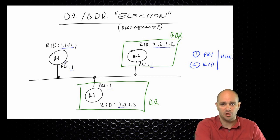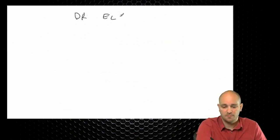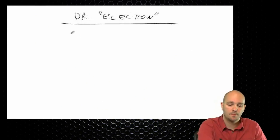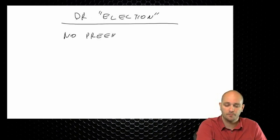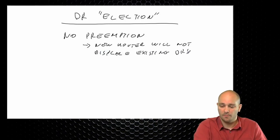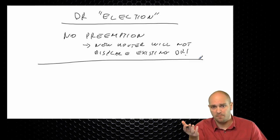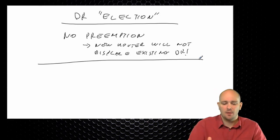There is one important caveat: if R1 booted first, it would be the only router on the network. It would ask if there are any DRs on the network, and finding none, R1 would actually be promoted to DR. This brings us to a critical point about DR election: there is no preemption. A new router will not displace an existing DR, no matter how much better the priority or how much higher the router ID — which creates a unique set of problems.